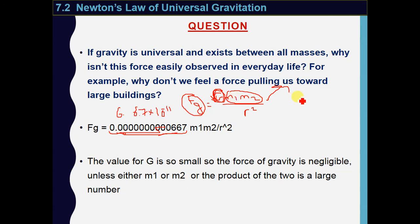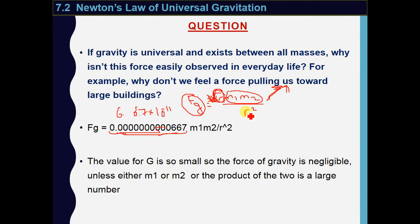That's why we feel the attraction between us and the Earth. When I multiply my mass with the mass of the Earth, this gives a very large number, so even when multiplied by G, I still get a large force of attraction — and I can feel it. This product must be a large number in order to feel the gravitational force, and the objects should be very close to each other.